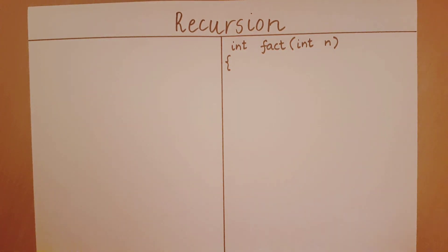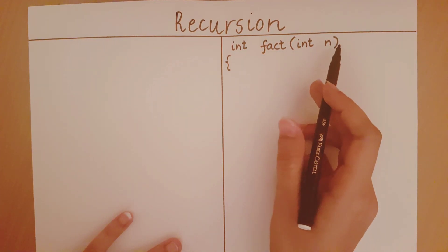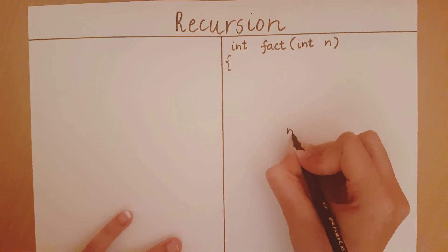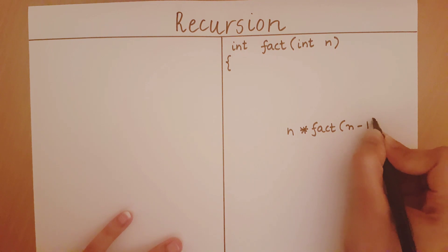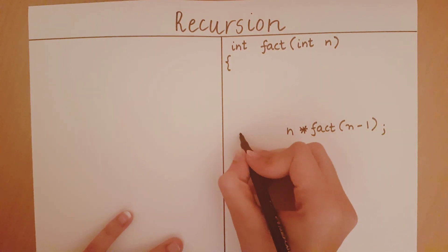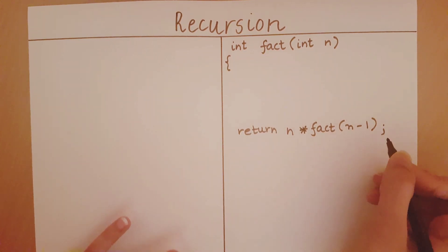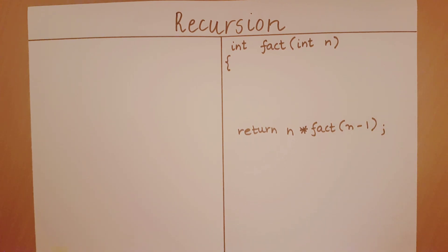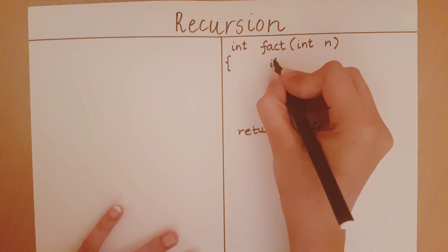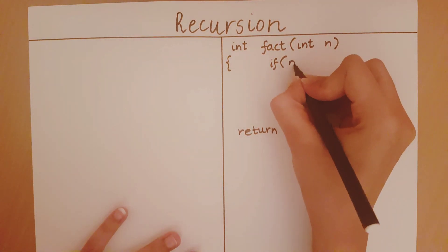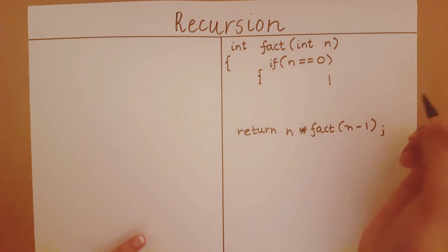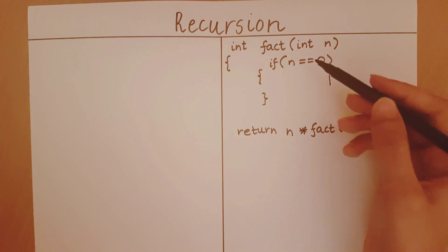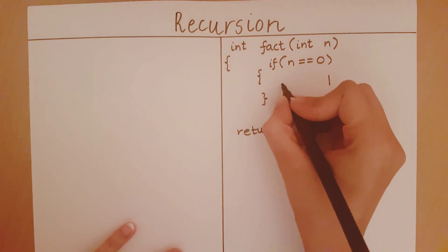So what have we said in the previous video? We said that the factorial of any number n, the solution is going to be n into the factorial of n minus 1. This will be the solution, so of course we must return it. We go on doing this until the problem becomes so simple that we directly give an answer without making another function call. That condition is: if n is equal to 0, the solution is 1. When we calculate 0 factorial, the solution is 1, so of course we return that.